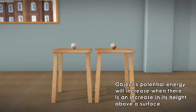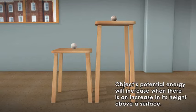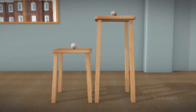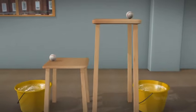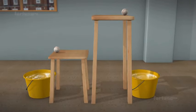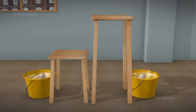An object's potential energy will increase when there is an increase in its height above a surface. Now imagine that we have two balls of the same size being dropped into identical buckets of water. The one being dropped from the higher point will possess more gravitational potential energy and so will do more work, creating a bigger splash.